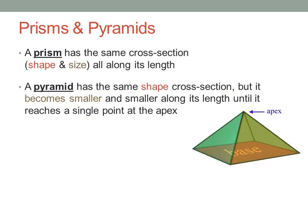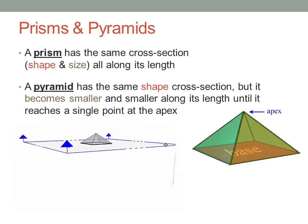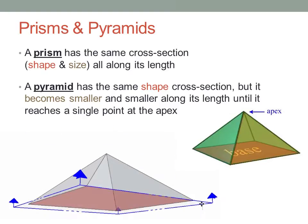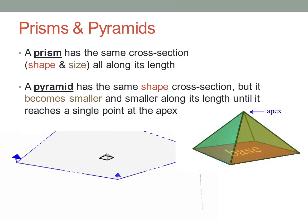A pyramid, on the other hand, has the same shape cross-section, but it gradually becomes smaller and smaller until it reaches a single point. That point is called the apex of the pyramid. Again, the base may not always be the one on the bottom.